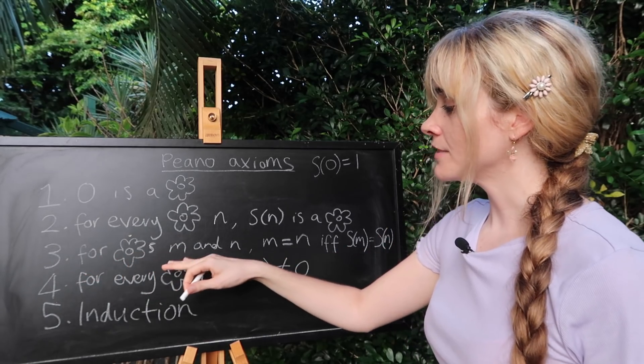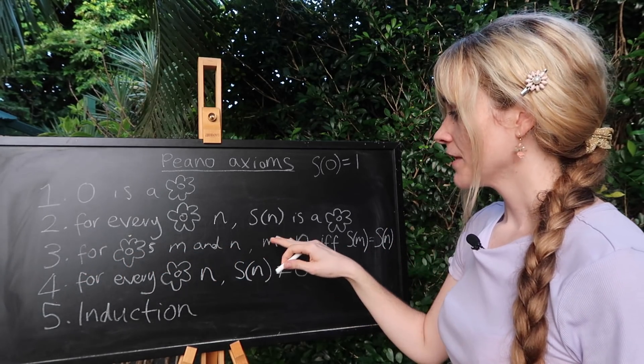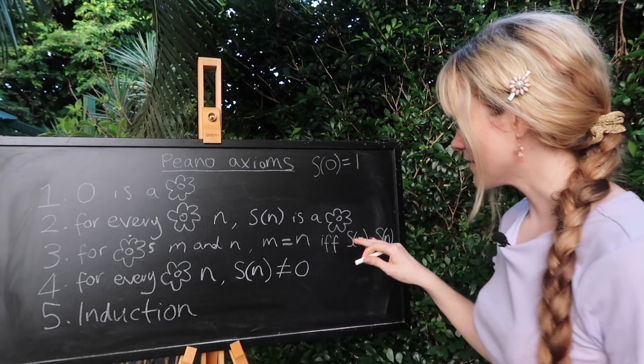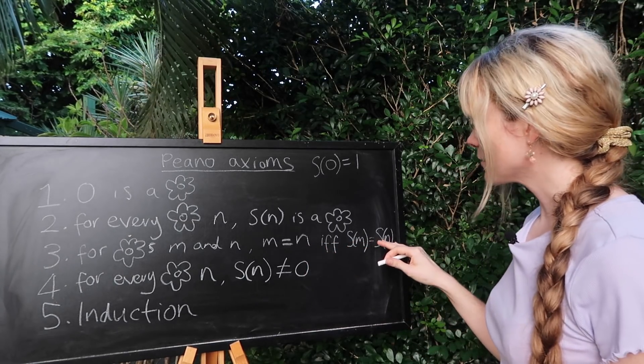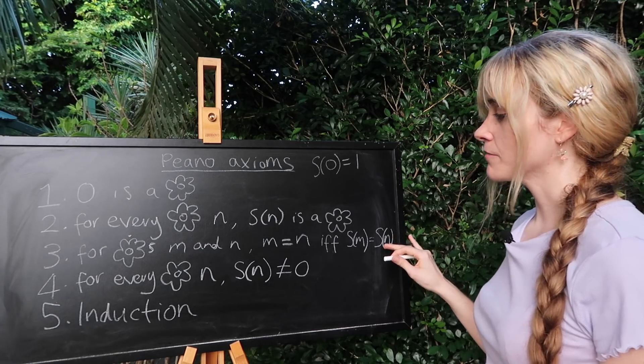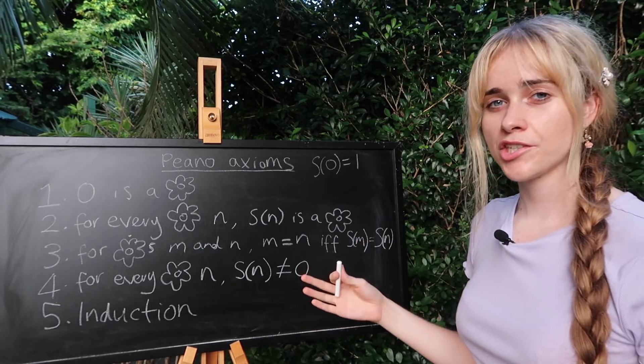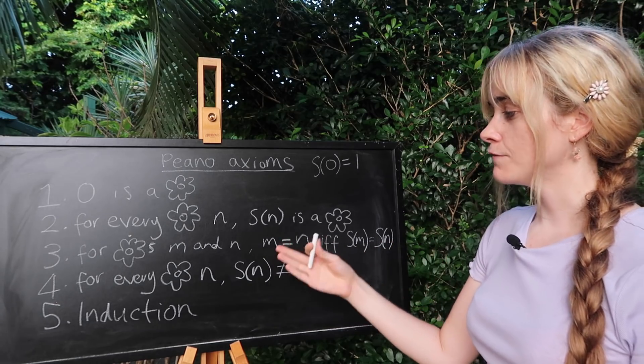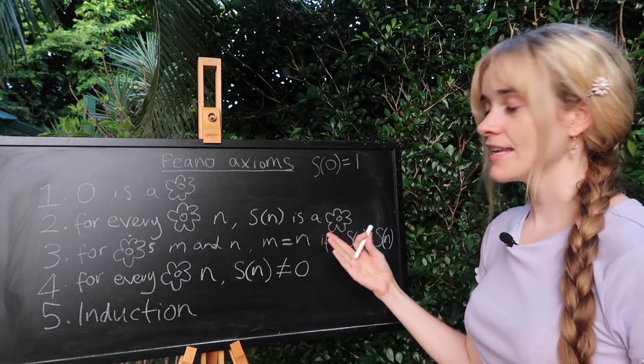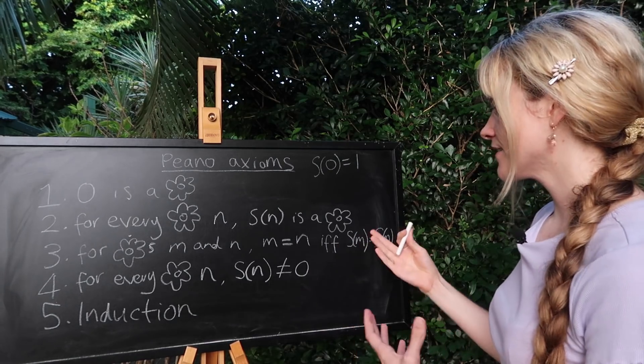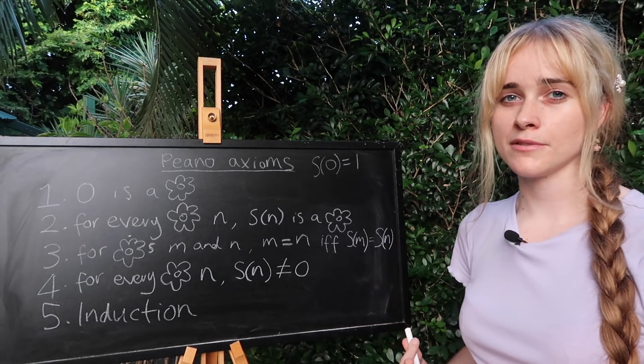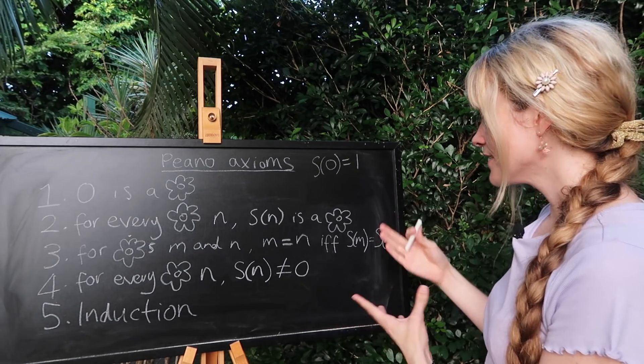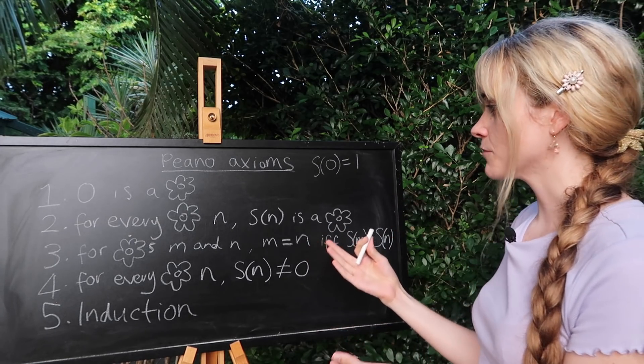Let's look at another one of our rules. Number three for natural numbers m and n, m is equal to n if and only if the successor of m is equal to the successor of n. This gives us a little bit more of a constraint on what a successor can be. You definitely can't have two numbers that are equal to each other if their successors aren't also equal to each other. So you can't have essentially double ups where the successors are equal but the numbers themselves weren't equal.